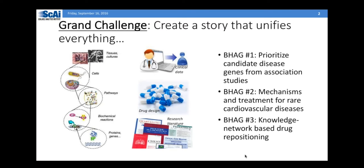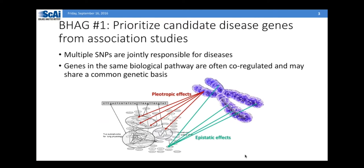The first one is to prioritize candidate disease genes from an association study. In this domain, we're talking about not just a single SNP that is responsible for the progression, response, or outcome of the disease — here we're talking about cardiovascular diseases.